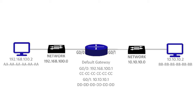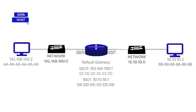We have two different local area networks: 192.168.100.0 and 10.10.10.0. Host 192.168.100.2 is going to send a message to 10.10.10.2. It takes the data and first needs to create an IP packet. This IP packet has the destination address 10.10.10.2 and the source IP address 192.168.100.2. So in the header we have the source and the destination, and it stuffs all the data into that packet.